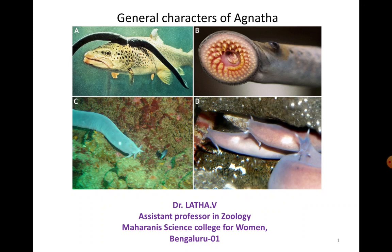They don't have jaws but they do have teeth. C and D are images of Myxine, or the hagfishes. They also have a rounded mouth surrounded by five to six tentacles around the mouth. These two belong to the class Cyclostomata.